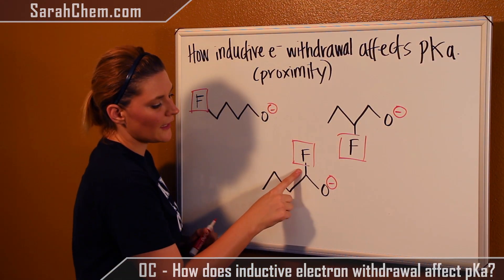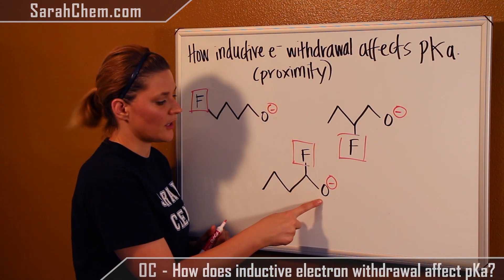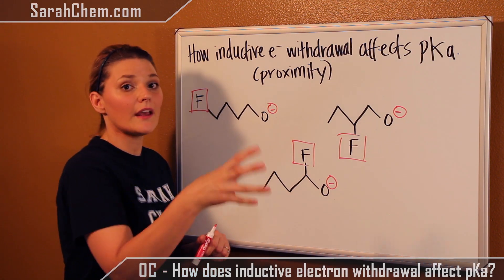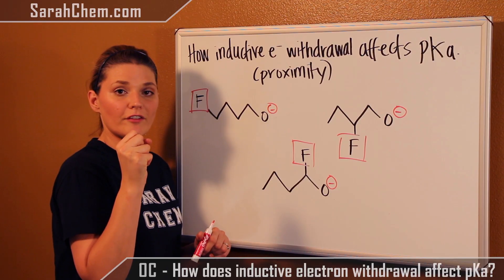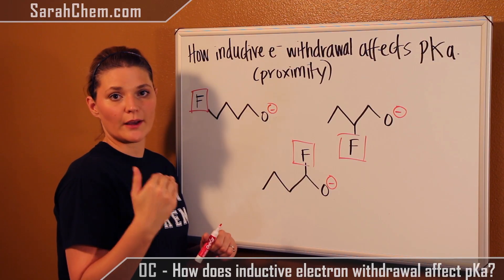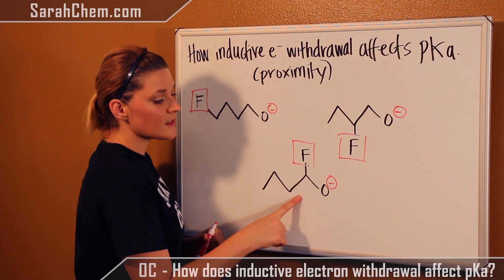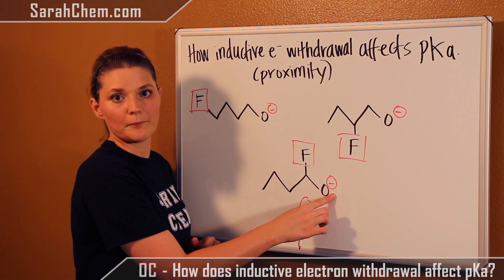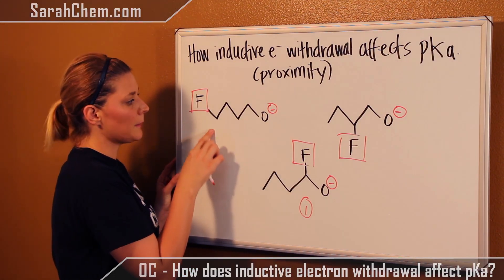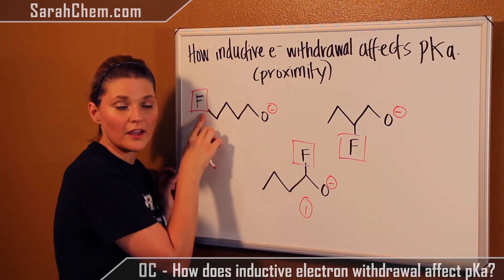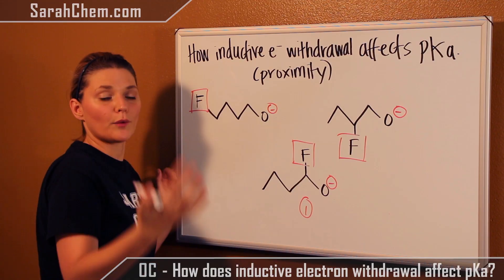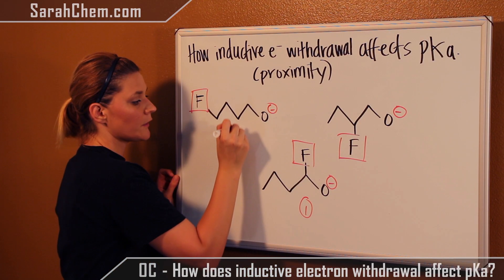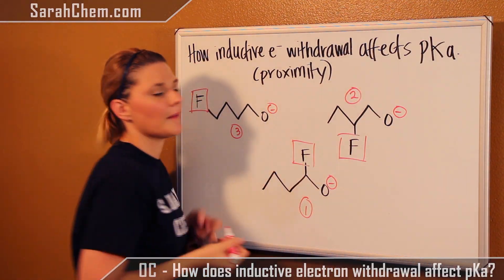This fluorine is right next to that oxygen, so it will have the easiest and greatest impact upon the oxygen, pulling those electrons away and diminishing the negative charge. So because this one is the closest, it would be the most acidic. In this case, this would be the least acidic because the fluorine is the farthest away, making it harder to pull those electrons from the oxygen. And this one here would be in the middle.